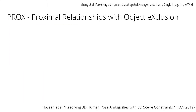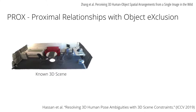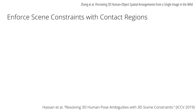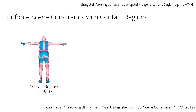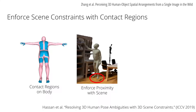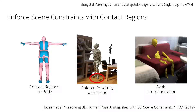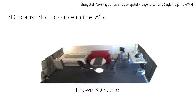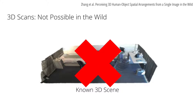PROX is a recent work that also considers humans and their environments. Using a known 3D scene, PROX recovers 3D humans in relation to that scene. To do this, PROX defines contact regions on the body to ensure those regions are in contact with the scene, while also avoiding intersection with the environment. However, these approaches depend on existing 3D captures of the scene, which are not available in the wild.